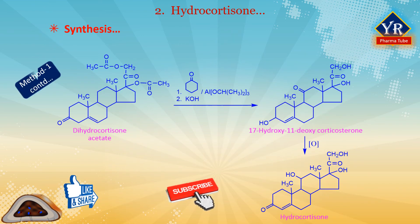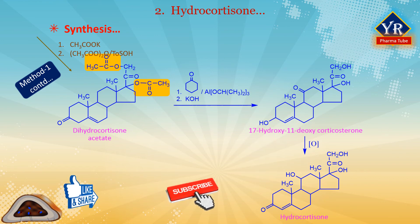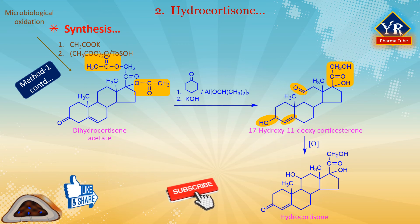Reacting the product with sodium iodide results in dehalogenation of the vicinal dibromide, during which the double bond is simultaneously shifted into the position between C5 and C6, giving the bromo ketone. The bromo ketone reacts with potassium acetate and then with acetic anhydride in the presence of p-toluenesulfonic acid, forming a diacetate. The resulting diacetate is oxidized in an Oppenauer oxidation reaction using aluminum isopropoxide and cyclohexanone as a hydrogen acceptor. During this, isomerization of the double bond into the primary position between C4 and C5 takes place, forming a stable conjugated vinyl ketone, after which the acetyl protection of both hydroxyl groups is hydrolyzed using potassium hydroxide, giving 17-hydroxy-11-deoxycorticosterone. This undergoes microbiological oxidation at position C11, forming the desired hydrocortisone.